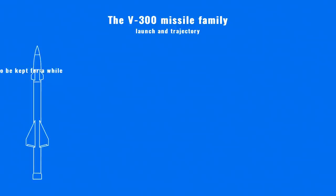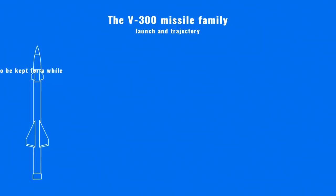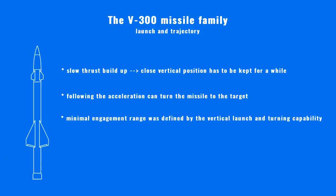The vertical launch position was demanded by the single-stage design. The thrust of the engines built up relatively slowly, and the missile lacked large wings. The control surfaces, or stabilizers, were effective only at supersonic speeds. So anything other than a vertical launch would have caused the missiles to crash following the launch.